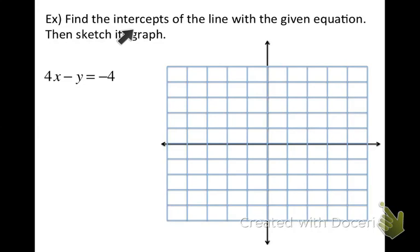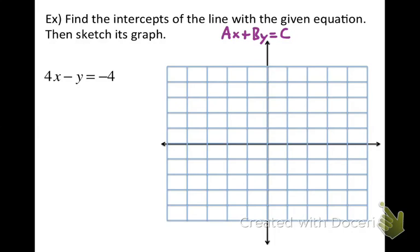The directions say we're going to find the intercepts of the line with the given equation and then sketch its graph. I'm teaching you how to graph a line when its equation is written in standard form — AX plus BY equals C — where you have your X term and Y term on the same side and the constant on the opposite side. Any time you have that setup, this is the method you can use. The first thing you do is find the X and Y intercepts.